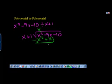Subtract x squared plus x, and we end up with negative 10x. Bring down the negative 10. Again, take a look at your x. How many times will it go into negative 10x? Negative 10.